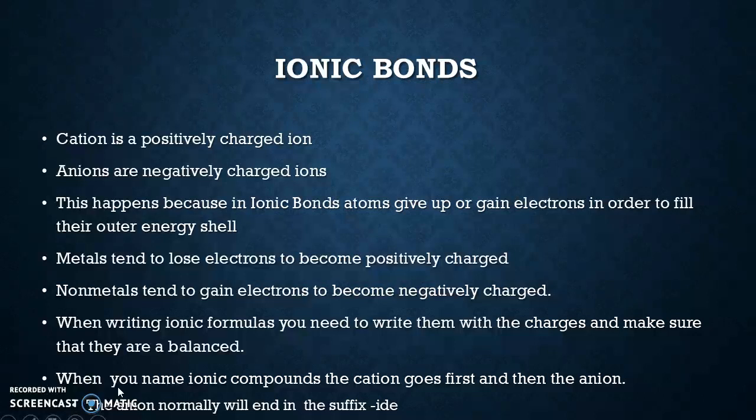Metals tend to lose electrons to become positively charged, and non-metals tend to gain electrons to become negatively charged. Using the sodium and chloride example — sodium is a metal and chloride is a non-metal — and the two of them together in that ionic bond give us table salt. When writing ionic formulas, you need to write them with the charges and make sure they are balanced, because if not, something will end up being more positive or more negative, and in a laboratory setting that can make a major difference.